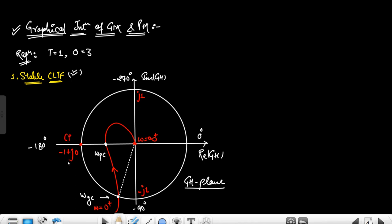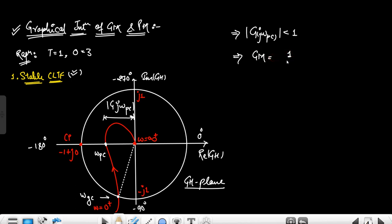The unit circle goes from j1 to −j1, and the critical point is −1 + j0. The gain crossover frequency is where the polar plot intersects the unit circle, and the phase crossover frequency is where the polar plot intersects the negative real axis (the −180° line). The magnitude at the phase crossover frequency ωpc is less than 1 when ωpc lies before the critical point. The gain margin is the reciprocal of the magnitude at the phase crossover frequency, so if magnitude < 1, then gain margin > 1.